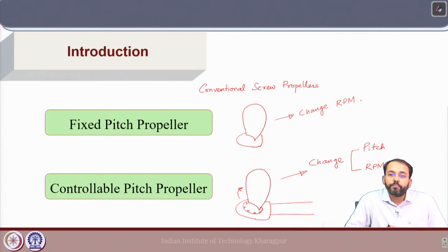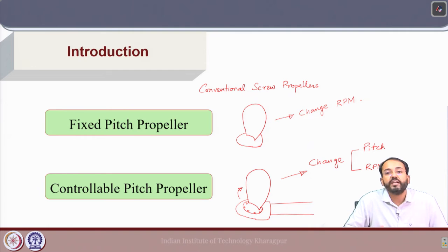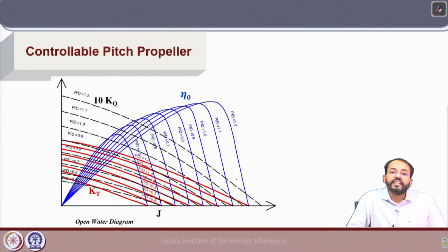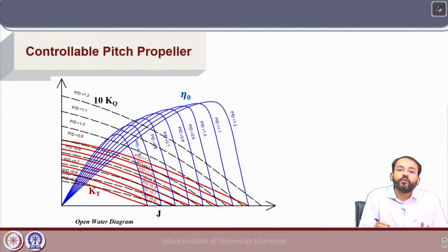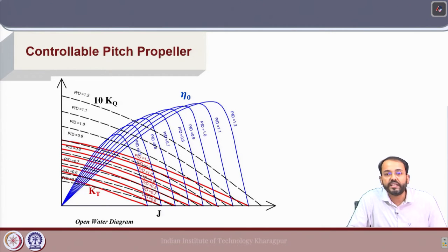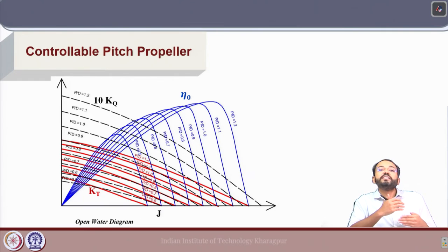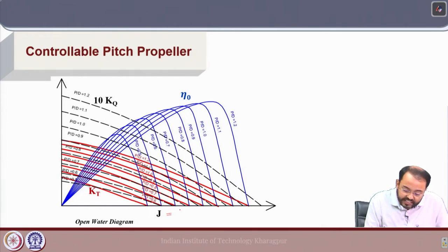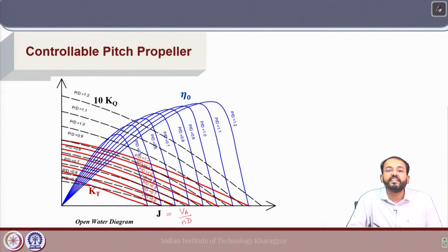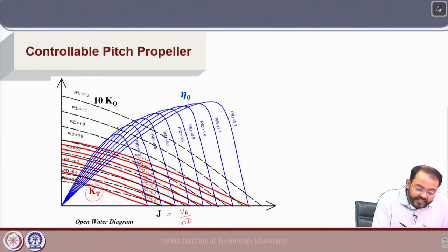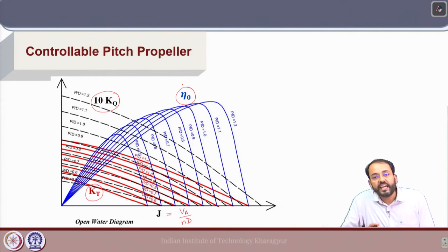We have seen the effect of variation of pitch on the open water curves for a ship propeller. This set of open water diagrams is given for different pitch ratios for a specific propeller design. Keeping other geometrical factors same, if we change only the pitch ratio, we will see that with J (the advance coefficient given by VA/ND, where VA is the speed of advance), the thrust coefficient KT, 10 times the torque coefficient KQ, and open water efficiency ηO all vary with both J and pitch ratio.